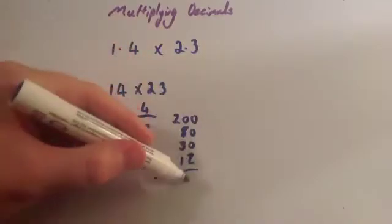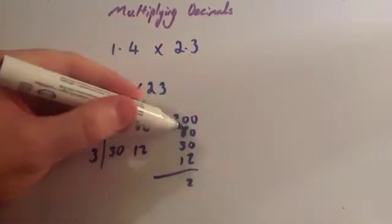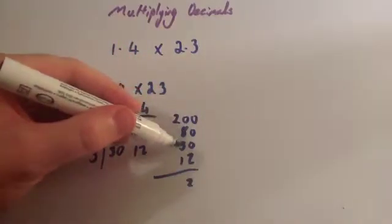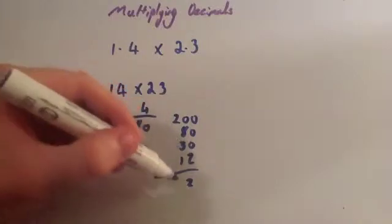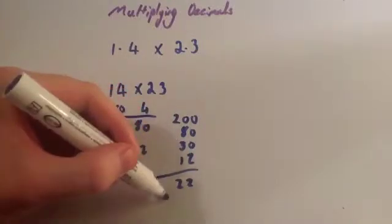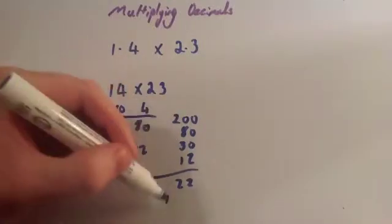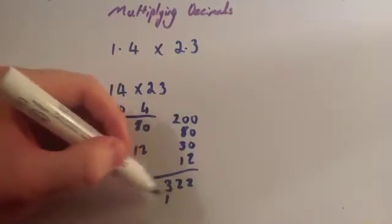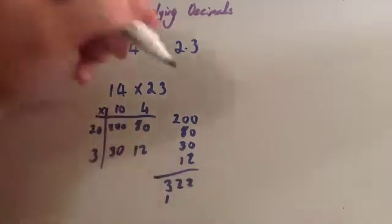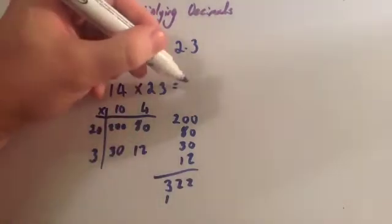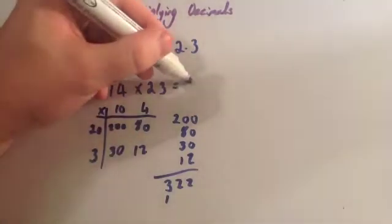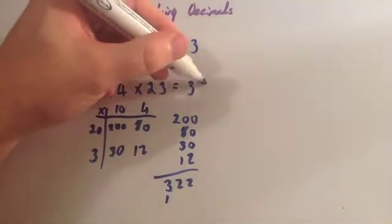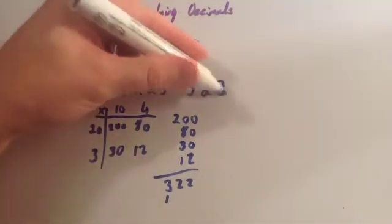Adding those together: we get 2 in the units. 8 plus 3 is 11, plus 1 is 12 — carry the 1. 2 plus 1 is 3. So we get 322. So 14 times 23 is 322.